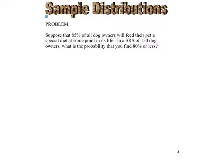Let's do a problem. It says, suppose that 85% of all dog owners will feed their pet a special diet at some point in its life. In an SRS of 150 dog owners, what's the probability you will find 80% or less?